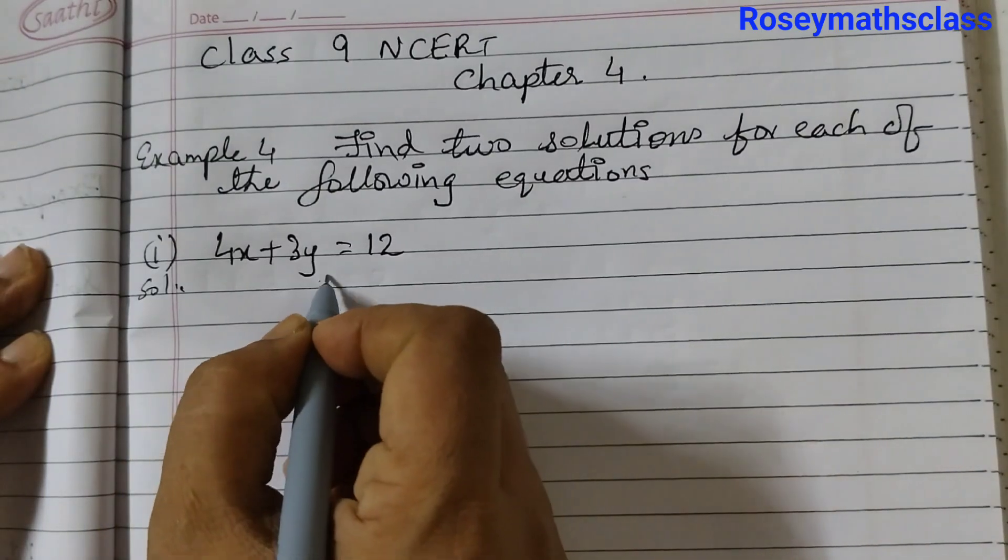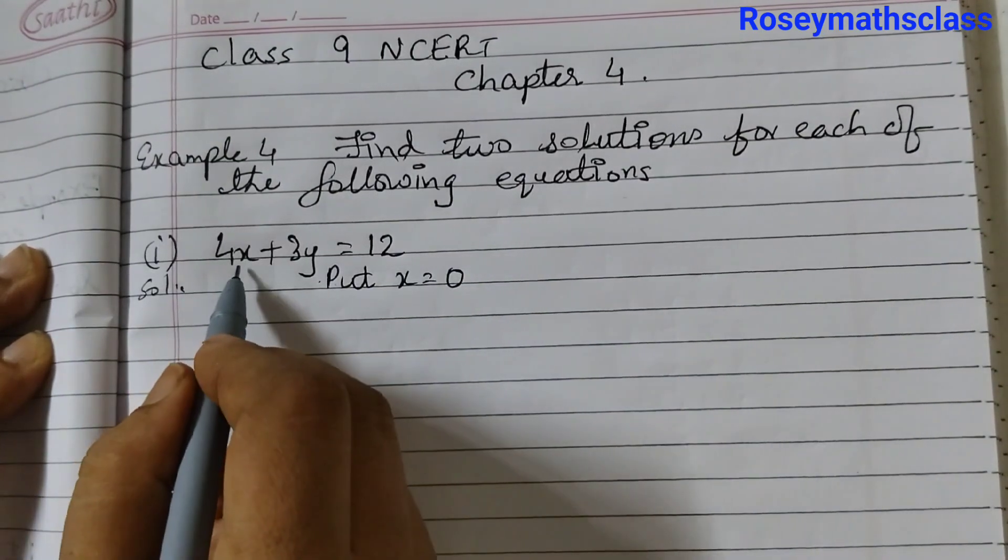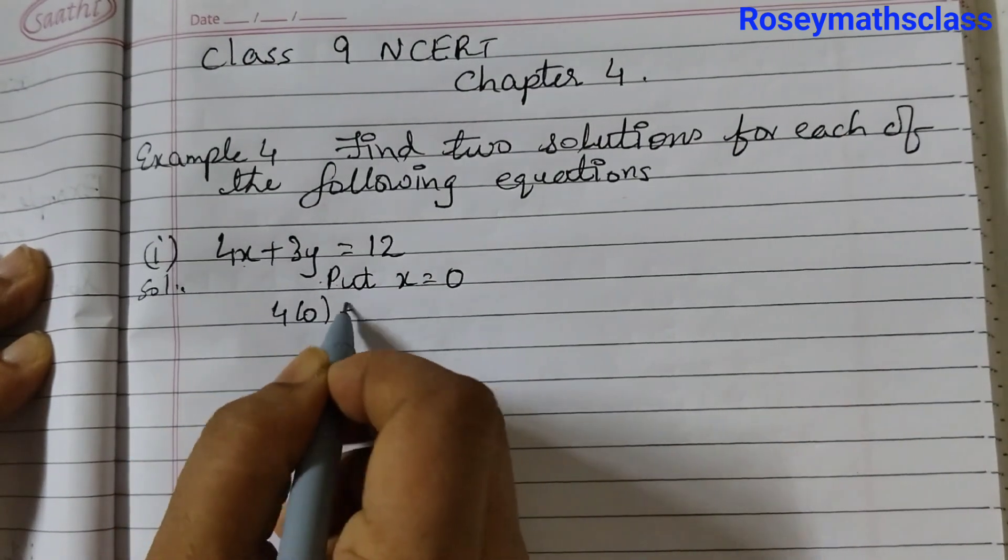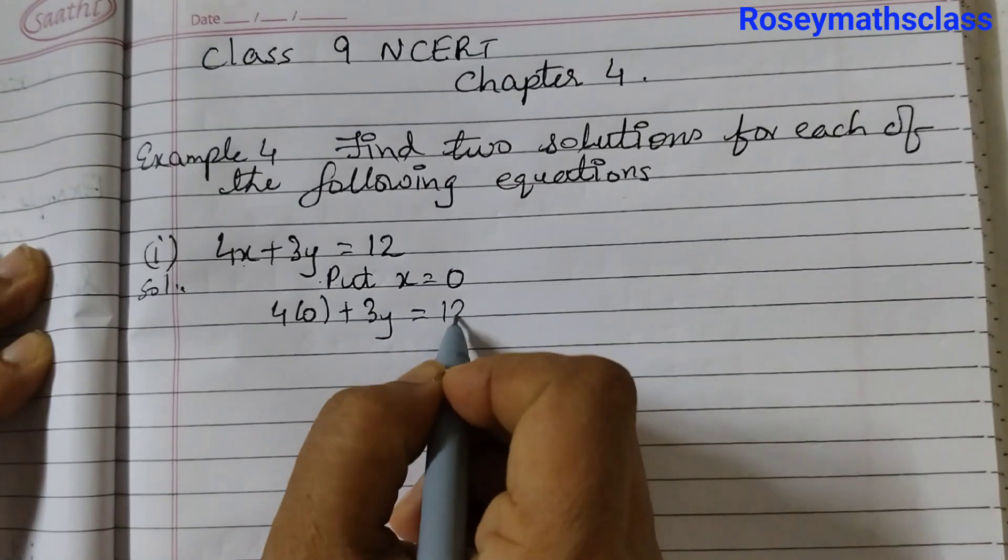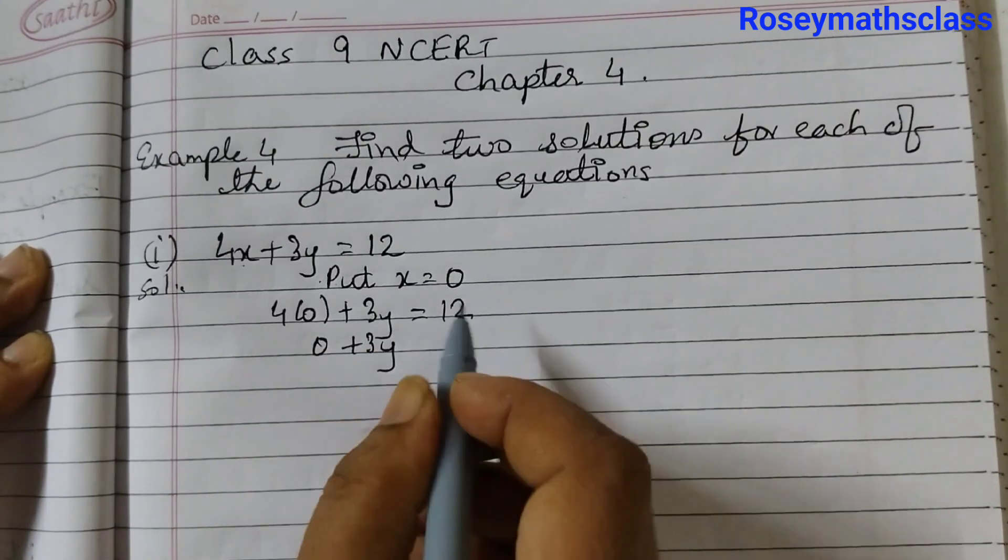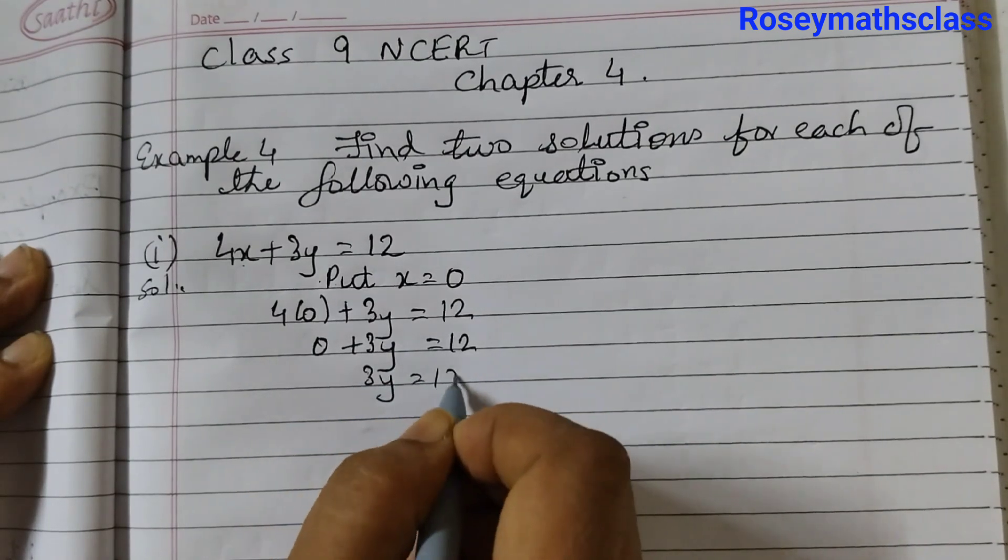So let's put x equals to 0. In place of x we will put 0. So 4 into 0 plus 3y is equal to 12. 4 into 0 is 0. So 0 plus 3y equals to 12. 3y is equal to 12.